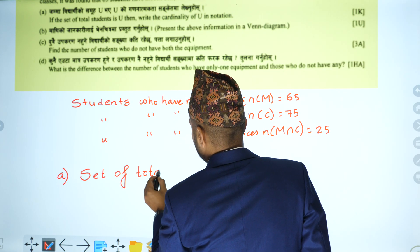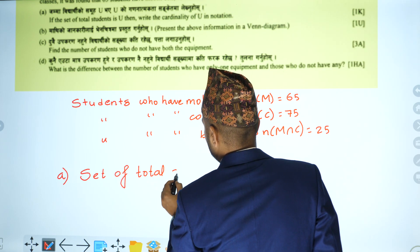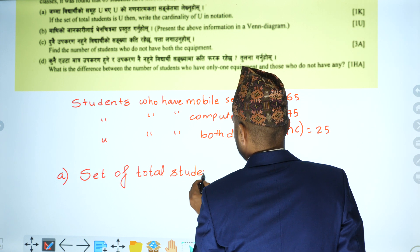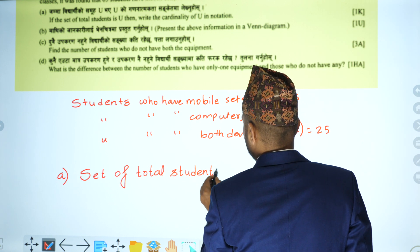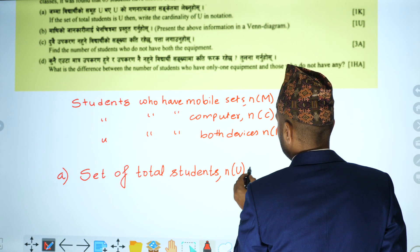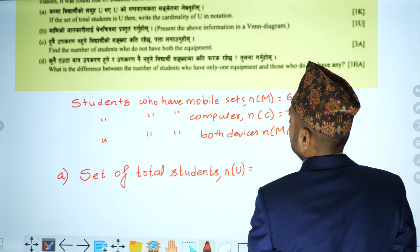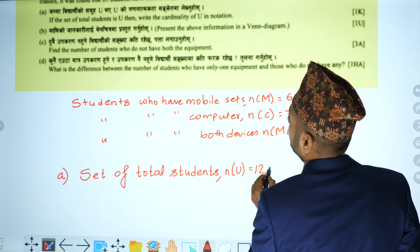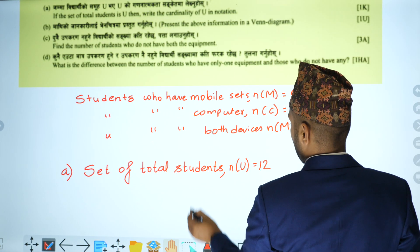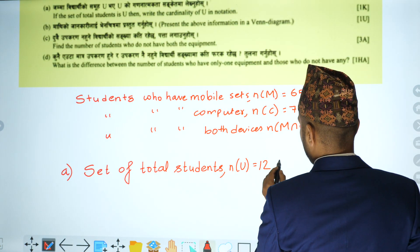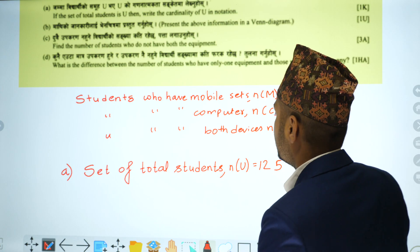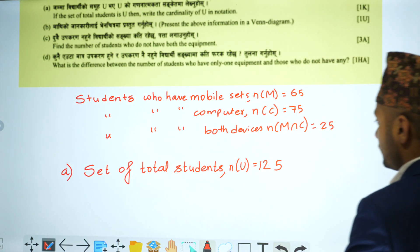The set of total students — the cardinality of U is 125. So n(U) = 125.